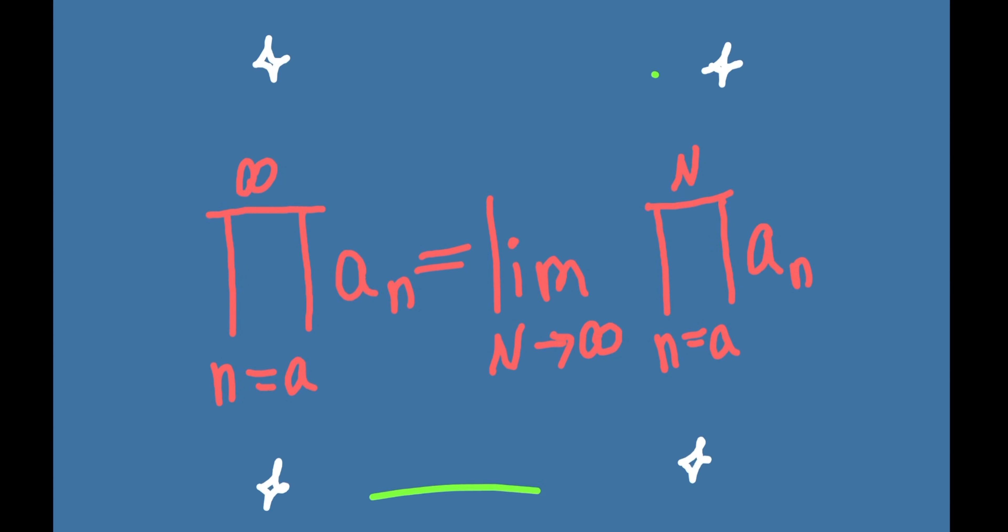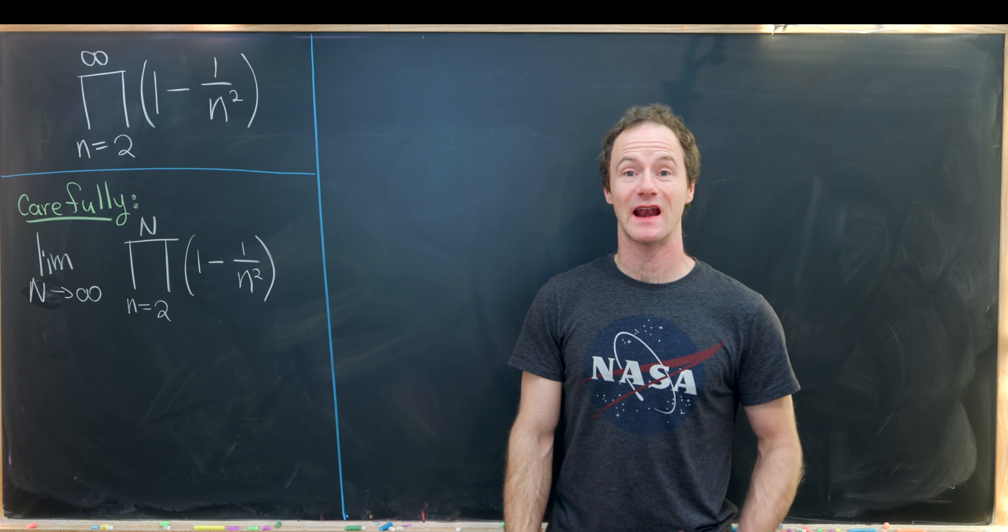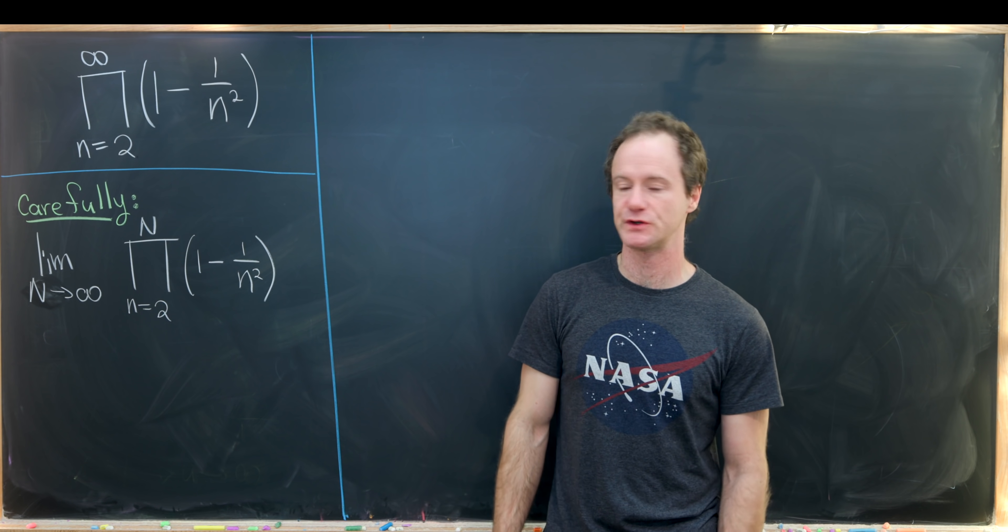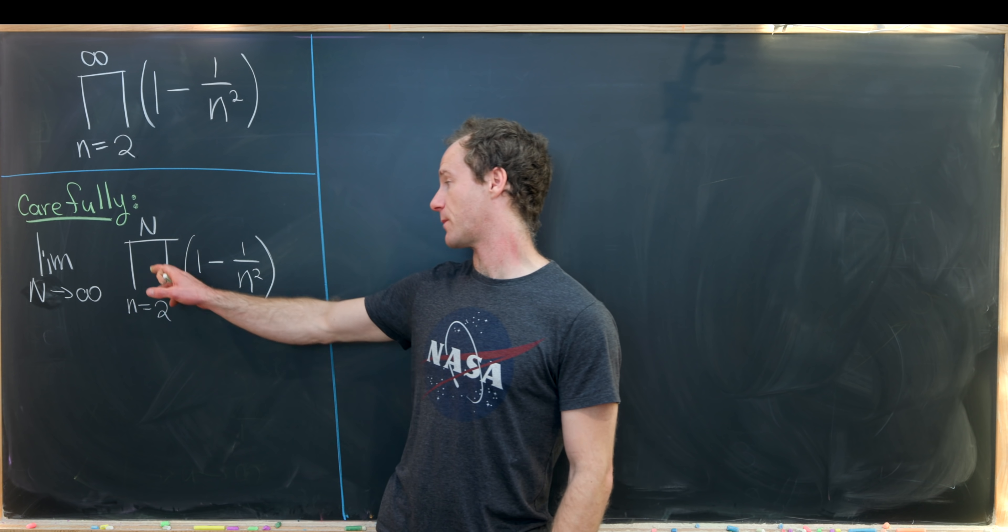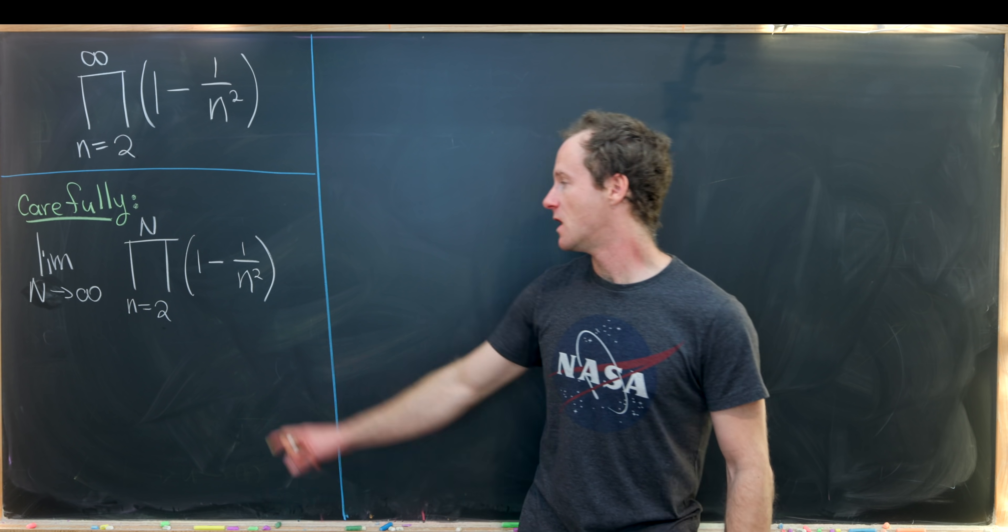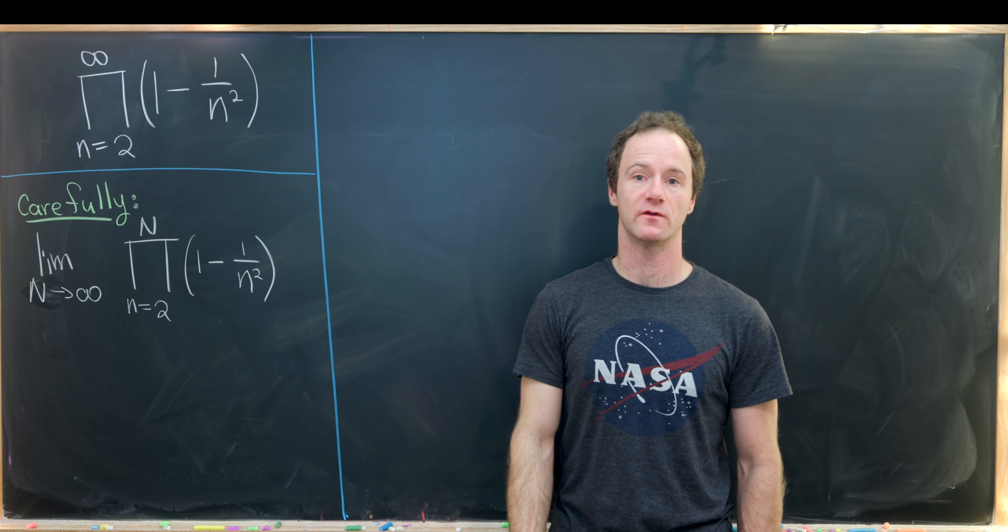here we'll define the infinite product in terms of the limit of partial products. So in our case, that will mean that our goal will be to calculate the limit as capital N goes to infinity of the product as n goes from 2 to capital N of 1 minus 1 over n squared.